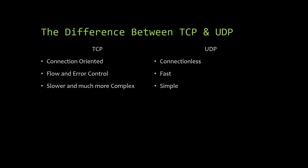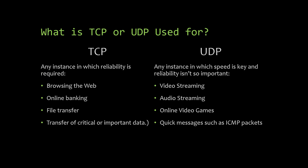The difference between TCP and UDP: TCP is connection-oriented, has flow and error control, and is slower and more complex. UDP is connectionless, fast and simple. TCP is used any time reliability is required: browsing the web, online banking, file transfer, or transfer of critical data. UDP is used when speed is key and reliability is not so important: video and audio streaming, online video games, quick messages like ICMP packets, and many IM messages.